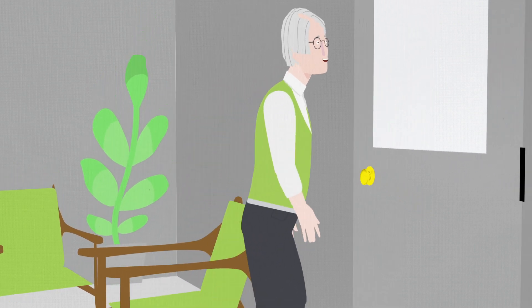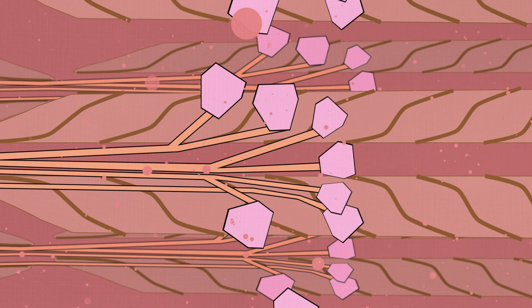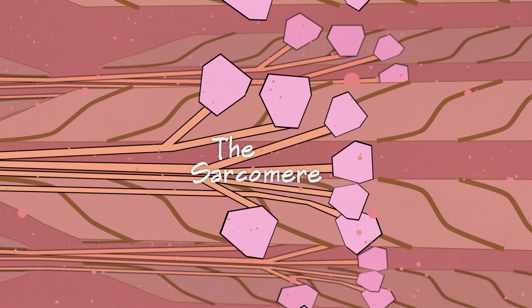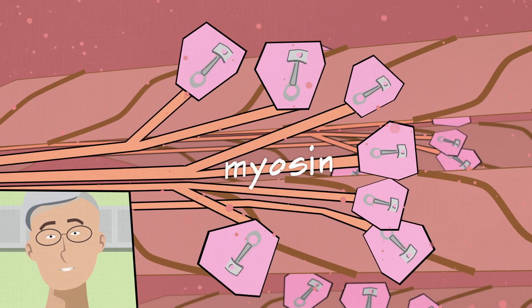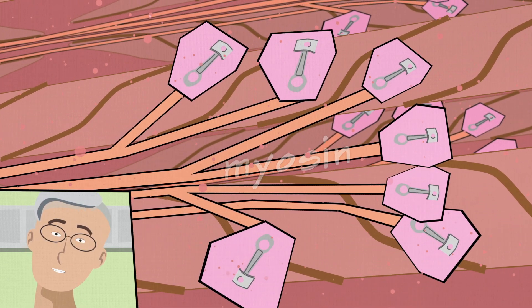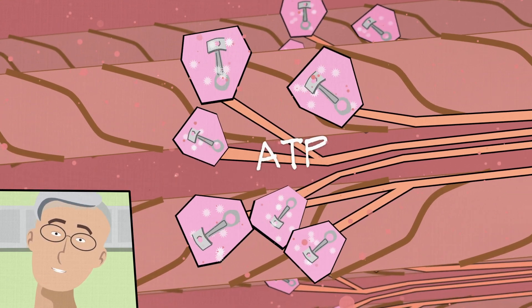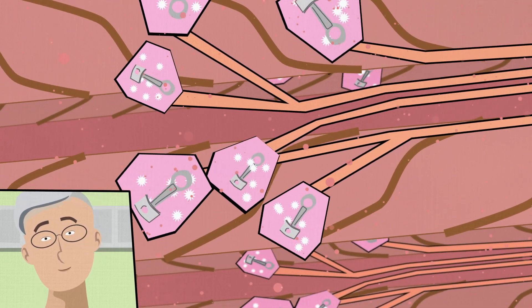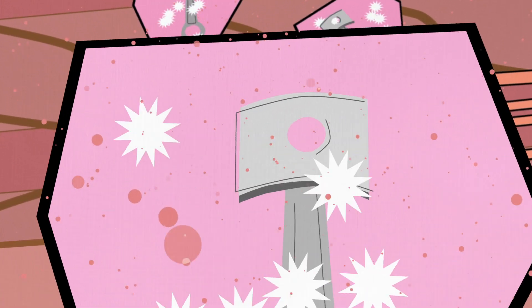Now the key to muscle function is its ability to contract and generate force, and that's driven by a biological machine in muscle called the sarcomere. Now the sarcomere contains a motor, myosin. Myosin is like an engine. It takes energy in the form of ATP, an energy molecule in the cell, and it converts it into mechanical force.